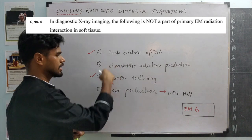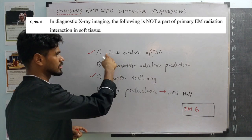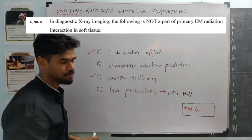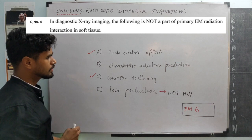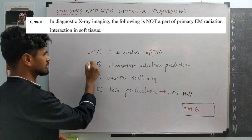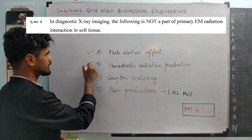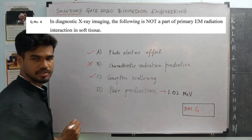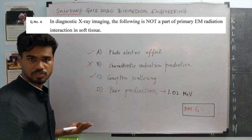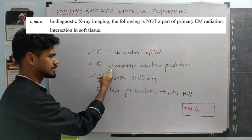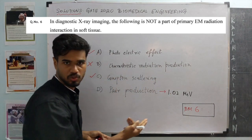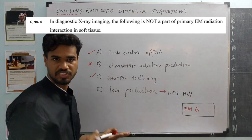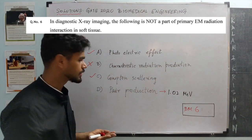What the electrons do after that differs between these two cases. There is no characteristic radiation in interaction with soft tissues, because characteristic radiation is what happens at the cathode where the x-rays are generated.